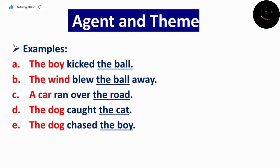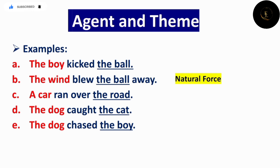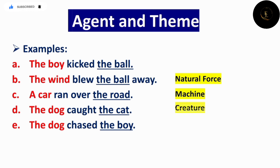کچھ examples دیکھتے ہیں۔ 'The boy kicked the ball' — یہاں performer the boy ہے جو human ہے، تو یہ agent ہے۔ 'The wind blew the ball away' — یہاں the wind non-human ہے، ایک natural force ہے، لیکن یہ بھی agent ہے۔ 'A car ran over the road' — car بھی non-human machine ہے، پھر بھی agent ہے۔ 'The dog caught the cat' — the dog ایک creature ہے اور یہ action perform کر رہا ہے، تو یہ agent ہے۔ یہ سب performers ہیں، action play کرنے والے، یعنی agents ہیں۔